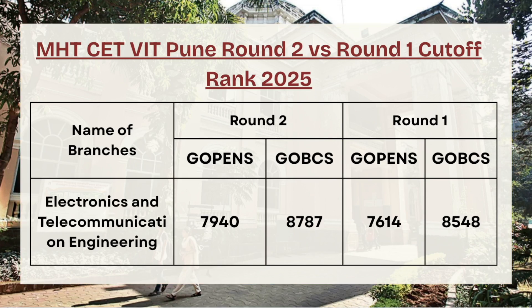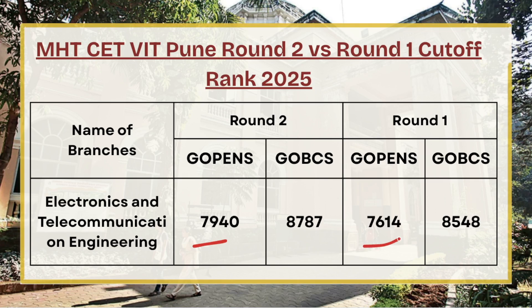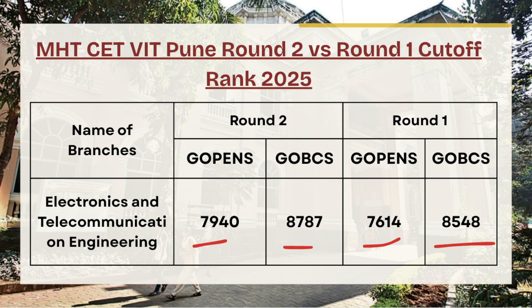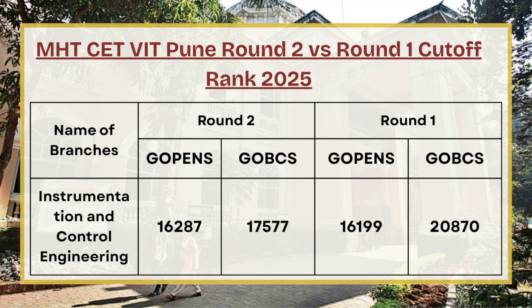Next in the list we have Electronics and Telecommunication Engineering. For G Open category, the cutoff rank is 7,940 in round two whereas in round one it was 7,640 — a difference of almost 300 points. For G OBC category, the cutoff was 8,787 for round two whereas in round one it was 8,548. In both G Open and G OBC categories there is a very slight change, and in round three candidates can expect a similar increase of around 300 to 350 points.